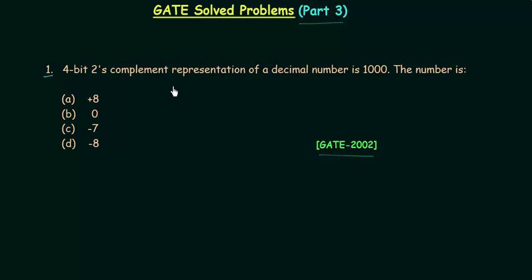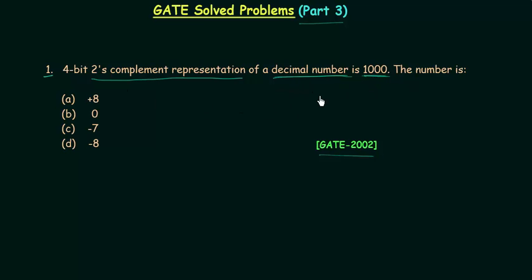The 4-bit 2's complement representation of a decimal number is 1 0 0 0. We have to find the decimal number. Let's see how we can solve it.